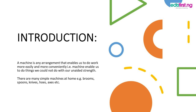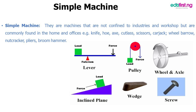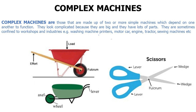We have two types of machines: the simple machine and the complex machine. Simple machines are not confined to industries and workshops but are commonly found in homes and offices — for example, knives, cutlery, wheelbarrows, brooms, and so on. Complex machines are made up of two or more simple machines which depend on one another to function. They look complicated because they are big and have lots of parts, and are majorly confined to workshops and industries.